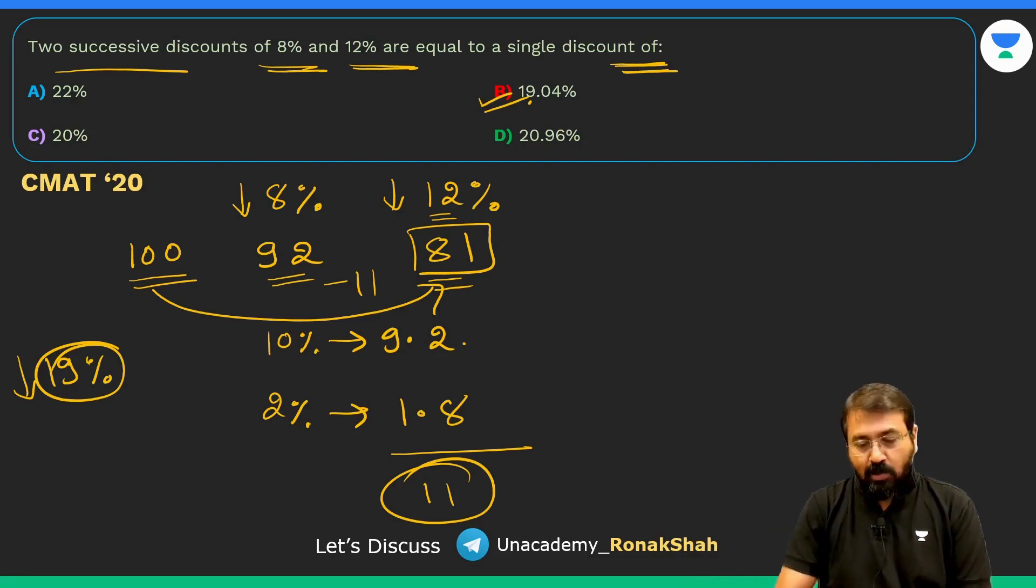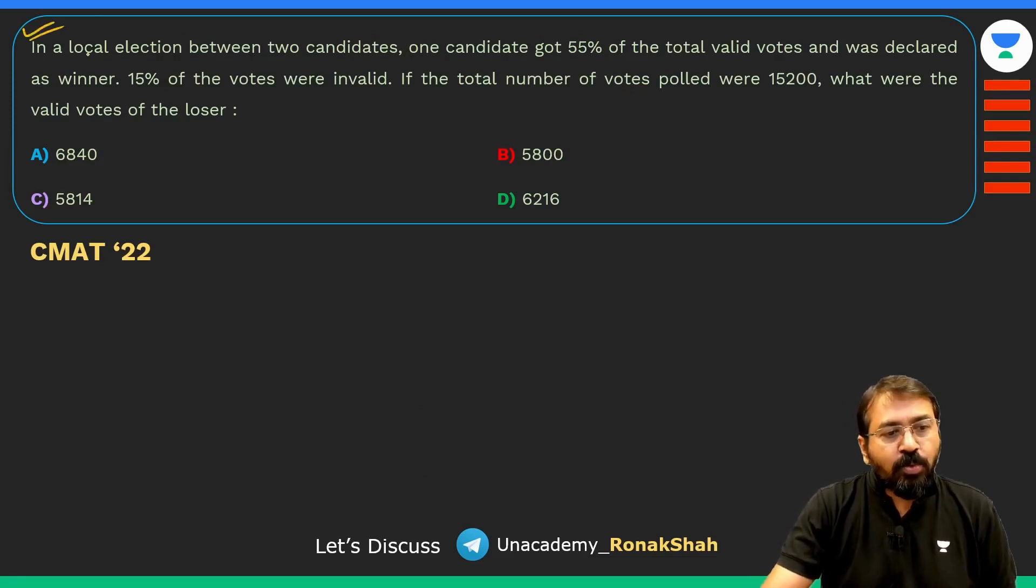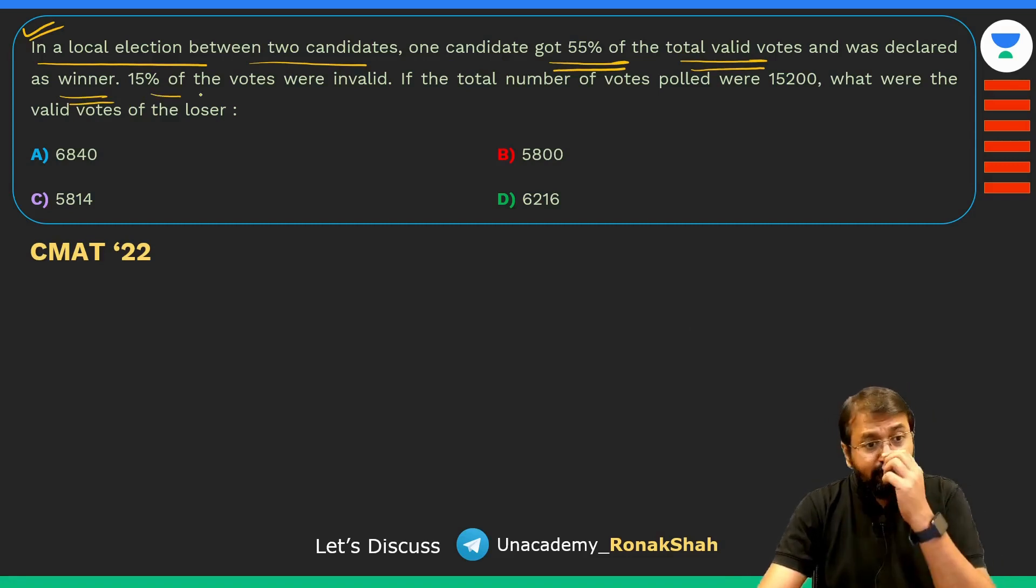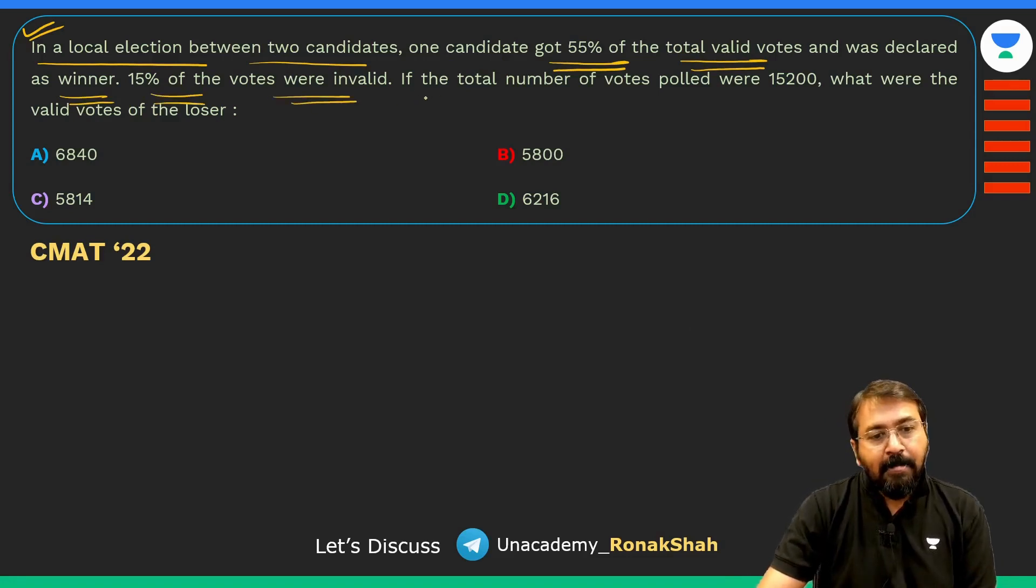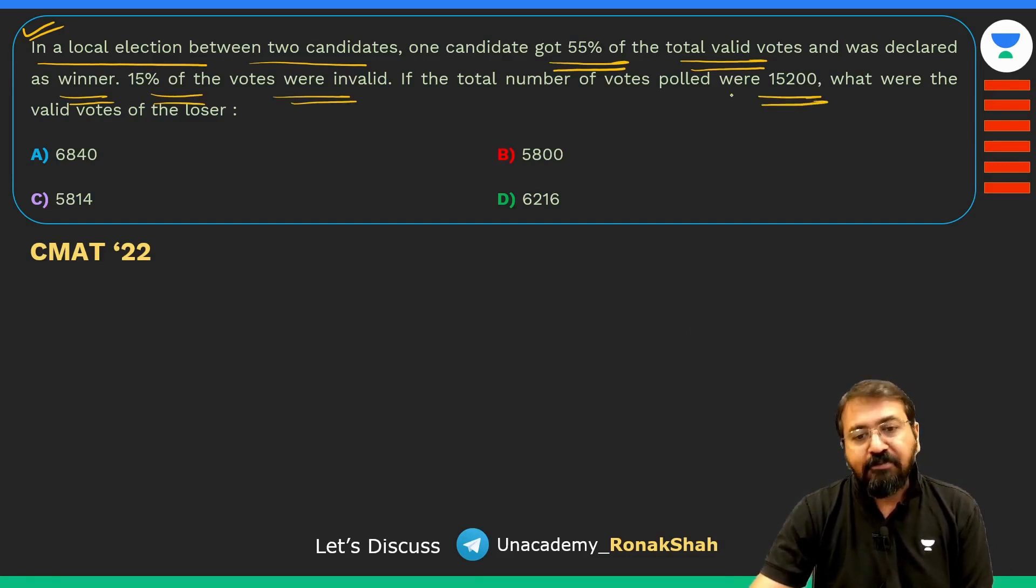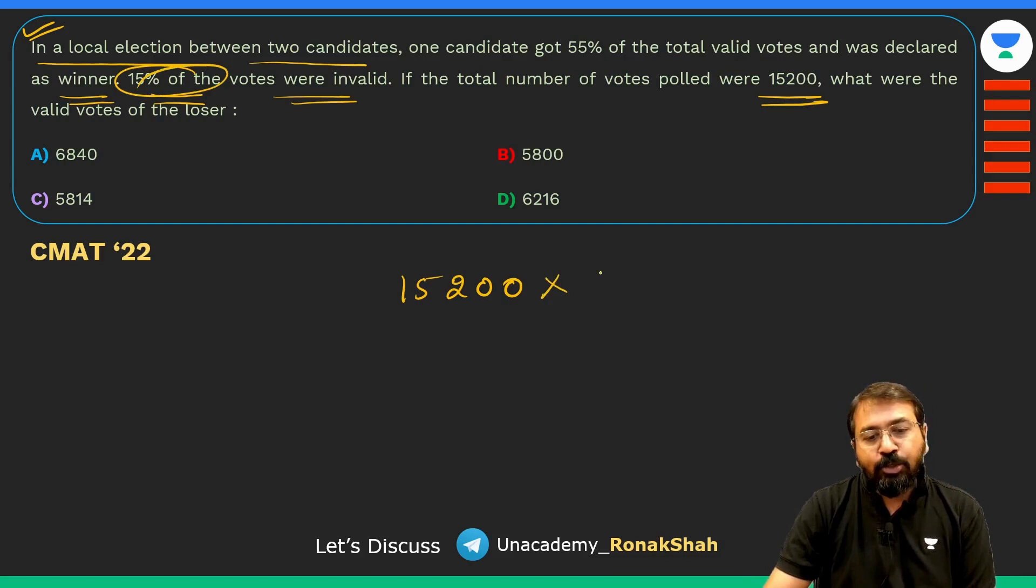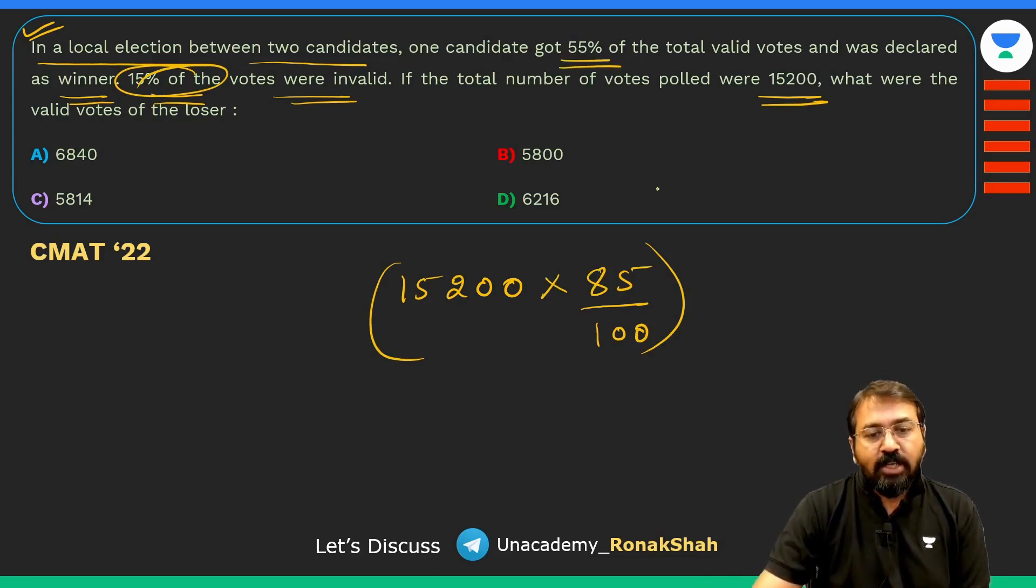Let's look at this question. In a local election between two candidates, one candidate got 55% of total valid votes and was declared as winner. 15% of the votes were invalid. If the total number of votes polled were 15,200, total votes were 15,200, out of which 15% votes were invalid. Can I say we need to consider only 85% of these votes, and out of this 85% votes the winner got 55% votes. So loser must have got 45% votes.